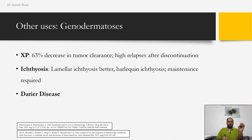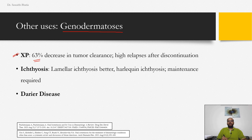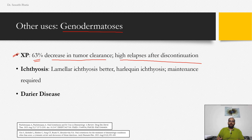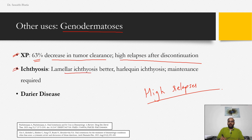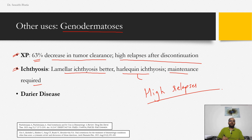For genodermatoses, in xeroderma pigmentosum approximately 63% tumor clearance decrease was seen, but with high relapses after discontinuation. In ichthyosis, lamellar ichthyosis shows better response; harlequin ichthyosis treatment should be started as early as possible, with maintenance required since the disease recurs on stopping. Darier's disease shows good response but relapses are common — a key principle across all these conditions is that stopping isotretinoin leads to high relapse rates.